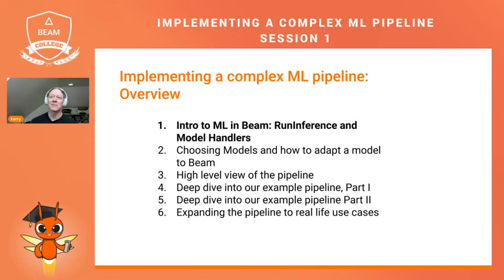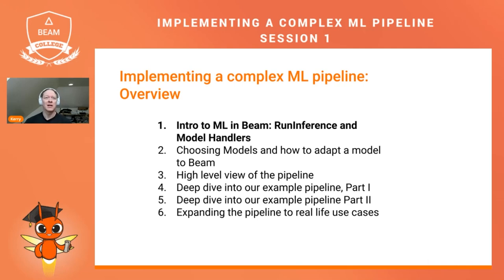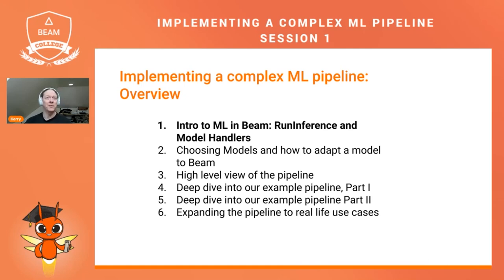In this session overall, we're going to be implementing a complex ML pipeline in Apache Beam. We have six sessions. In this first session, I'll give you an introduction to ML in Beam and our two workhorse ML transforms: the RunInference transform and the ModelHandler that encapsulates the details of a model or framework. In session two, we'll cover choosing models and adapting a model from elsewhere to a Beam pipeline. In session three, we'll take a high-level view of a specific pipeline, the models involved, and what it's trying to accomplish. In sessions four and five, we'll take a deep dive into the pipeline, demonstrating how we adapt each model and account for preprocessing, post-processing, and error handling.